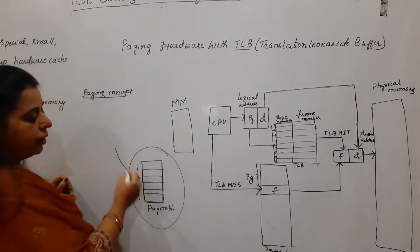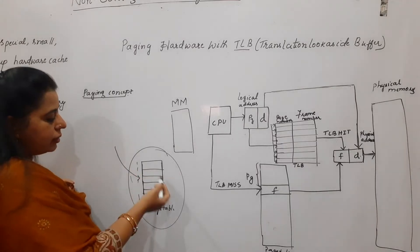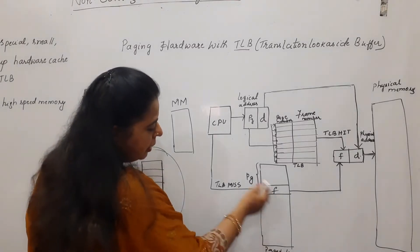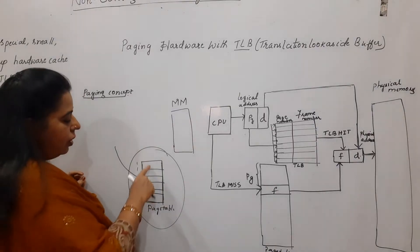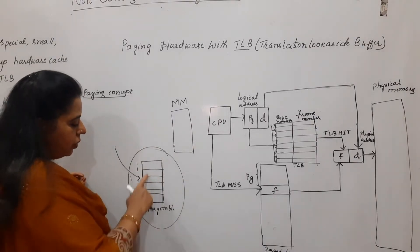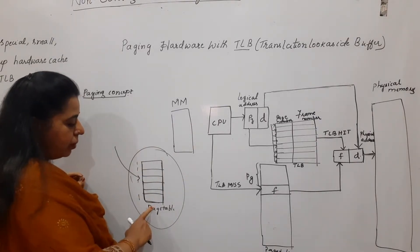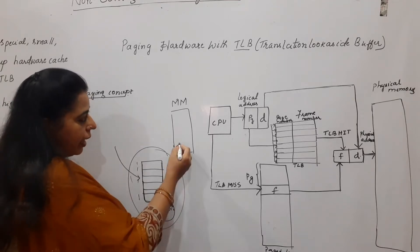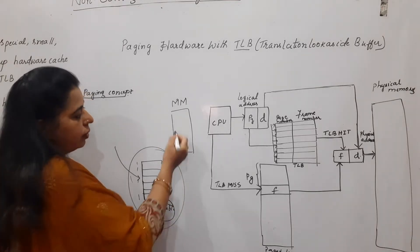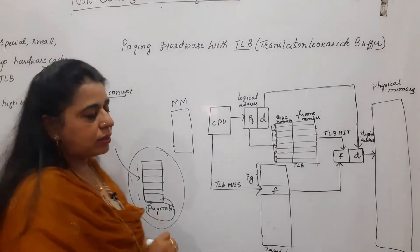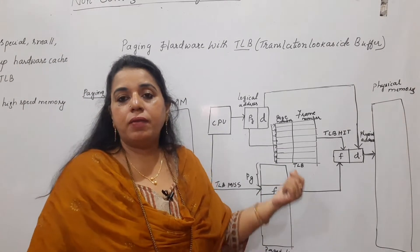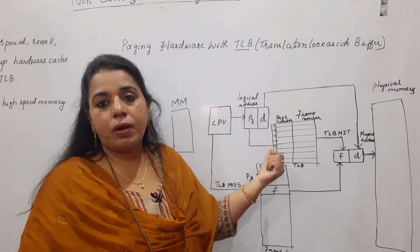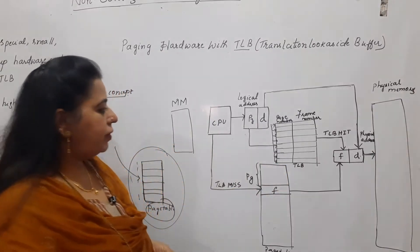As I said earlier, the CPU has to access main memory twice: the first time to access the page table, and the second time to fetch or access the instruction. That particular problem is what we are trying to eliminate here in paging hardware with TLB.